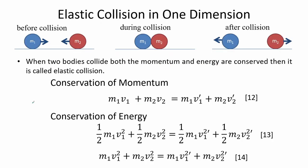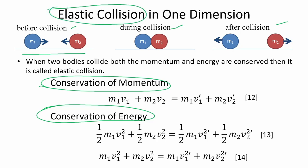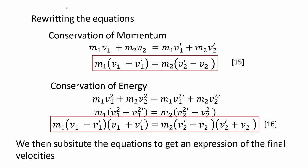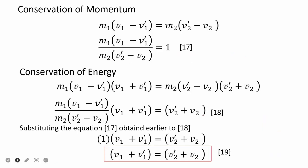Here we show two masses m1 and m2 before, during, and after collision on a frictionless horizontal surface. When two bodies collide and both momentum and energy are conserved, it is called an elastic collision. Rewriting the equations gives us the formulation for conservation of momentum and energy for an elastic collision, from which we derive equations 17 and 18.